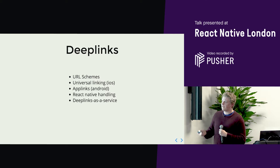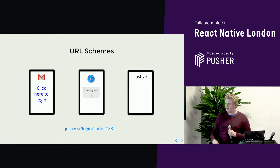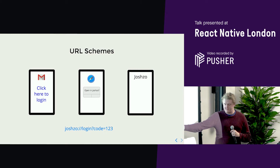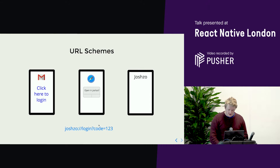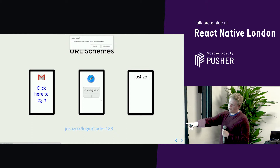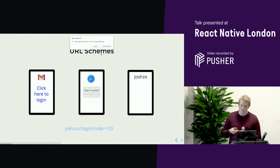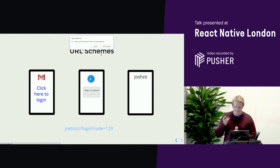The first one is URL schemes. This is what we saw in the Monzo example — that 'open in Joshso' prompt is an example of a URL scheme. The form is something like 'joshso://' followed by a path, just like a normal URL. In fact, your browser can actually do this. I've changed a link in the background pointing to Spotify, and you can see it's prompting me at the top to open Spotify on my computer. So this isn't just a mobile app thing — it works on desktop native apps too.